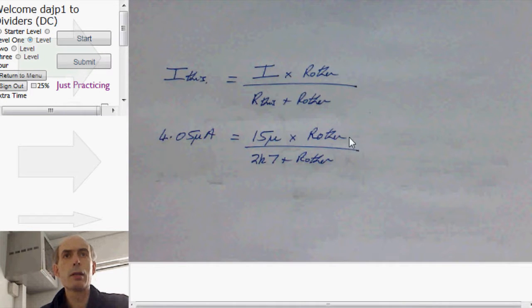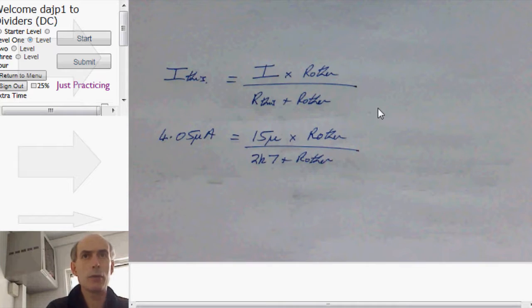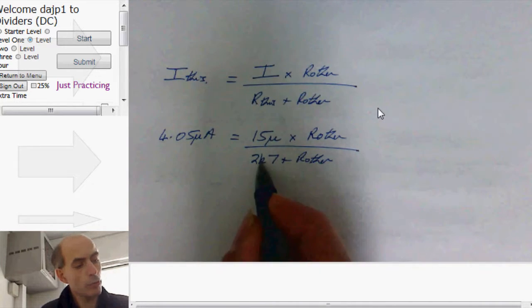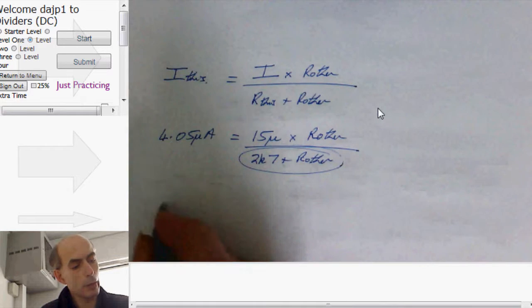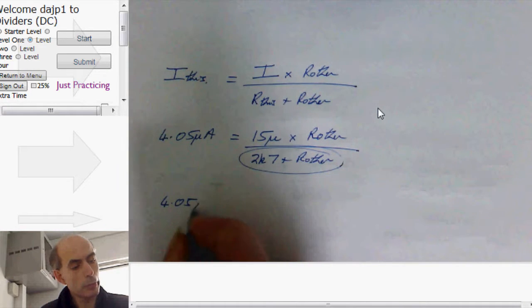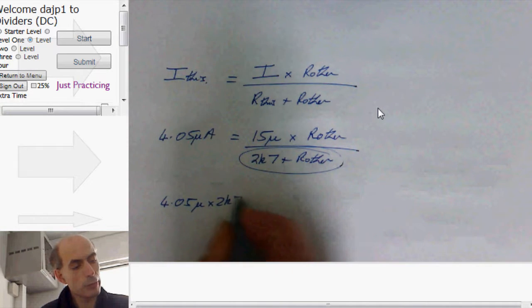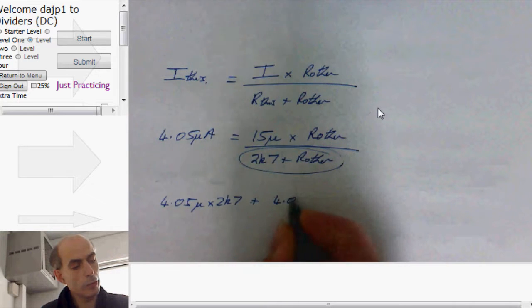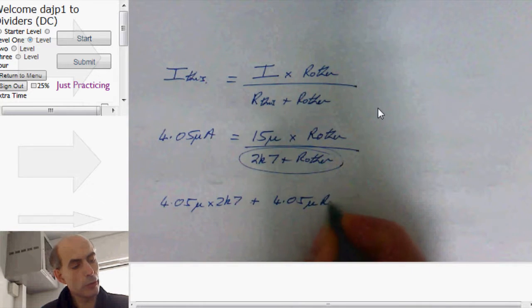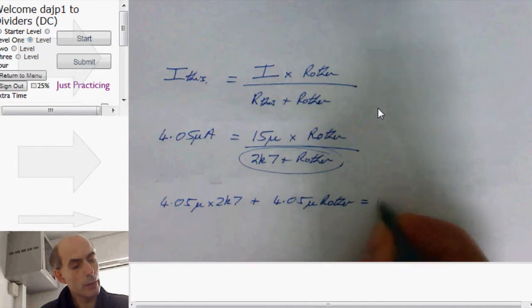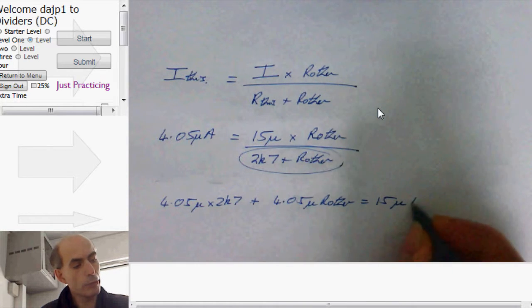So, this is the equation that we have to try and solve. And we can do that by just multiplying up by this. And that would give me 4.05 micro times 2k7 plus 4.05 micro times R other equals 15 micro times R other.